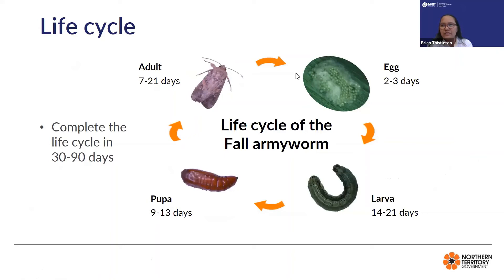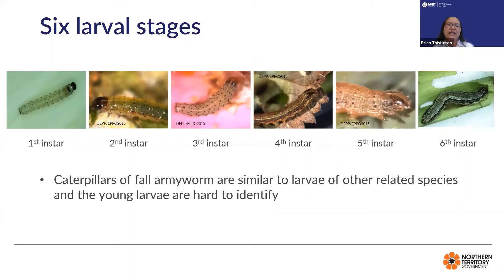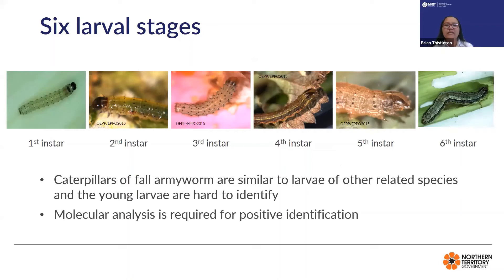The life cycle of the fall armyworm starts with eggs, which are laid in masses of approximately 150 to 200 eggs on the underside or on top of leaves, covered with a protective layer of scales from the female abdomen. The egg will hatch from two to three days and the larva will undergo six larval stages. The larvae are similar to other related species and young larvae are hard to identify — molecular analysis is required for positive identification at this stage.